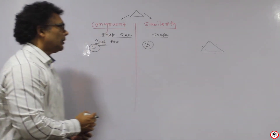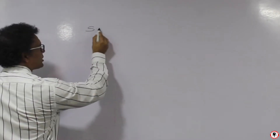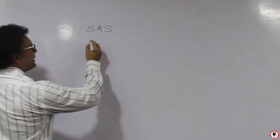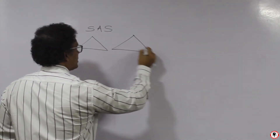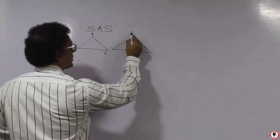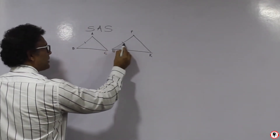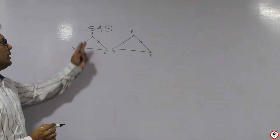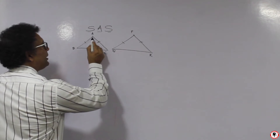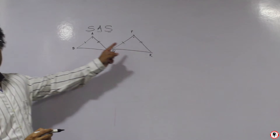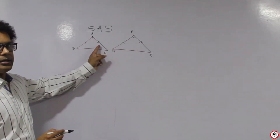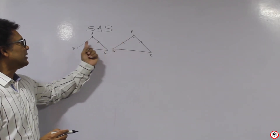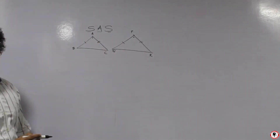What are the tests for congruence? There are five tests for congruence. One of the five tests is SAS — Side-Angle-Side. If you have triangle ABC and triangle PQR, and this side and this side are congruent, and again this side and this side are congruent, the included angle between the two sides must also be congruent. Then we can say both triangles are congruent by the SAS test.